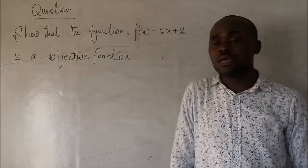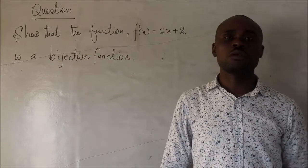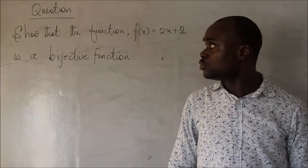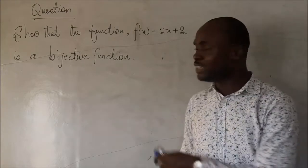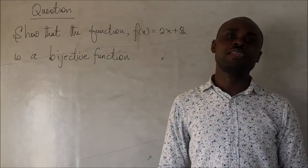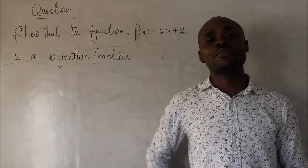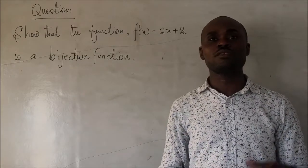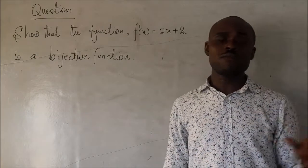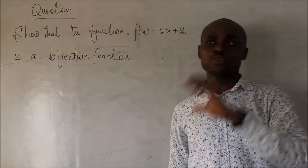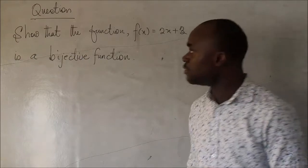Now, what we want to discuss is, I would like to solve a question on that. We want to show that the particular function of mapping is bijective in nature. Remember, I said that for a function to be bijective, it simply means the function is one-to-one and onto. Whenever a function is one-to-one and onto, they will say the function is bijective.